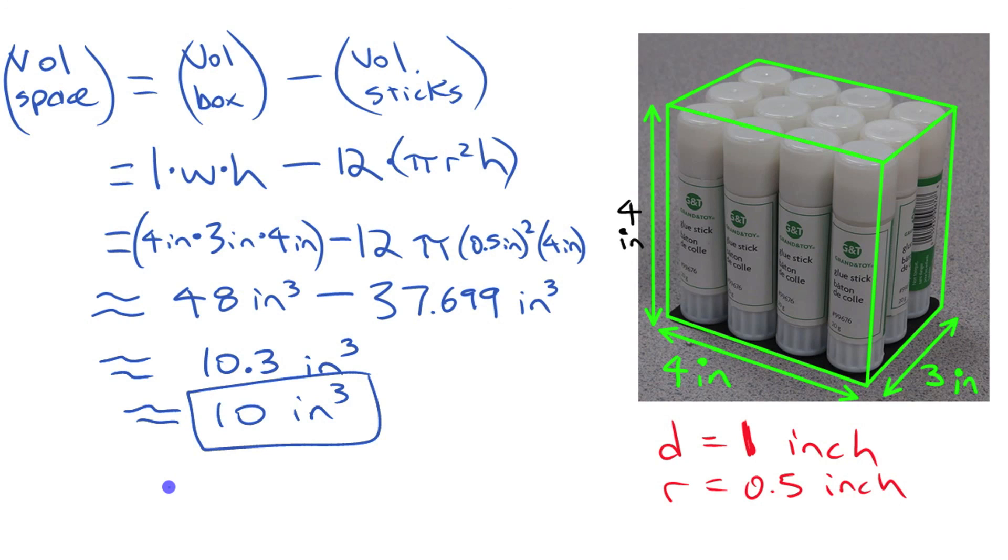All right. So that's how you can find some volumes using subtraction, right? Take the volume of the entire thing. Take the volume of the part that you're not interested in. It gives you the leftover space. All right. And that's it.